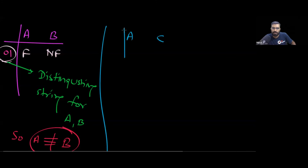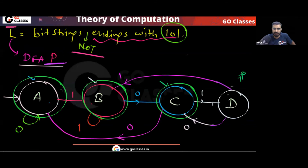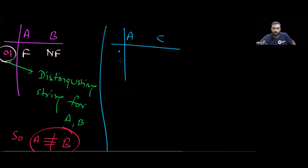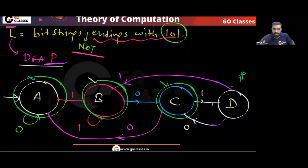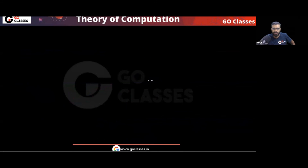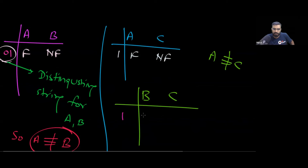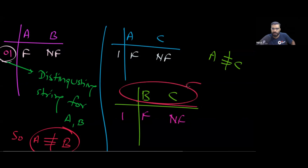What about A and C? Using string '1': A goes to a final state on '1', but C goes to a non-final state on '1'. So A is not equivalent to C. What about B and C? Using string '1': B goes to final, C goes to non-final. So B is also not equivalent to C. They are distinguishable by string '1'.